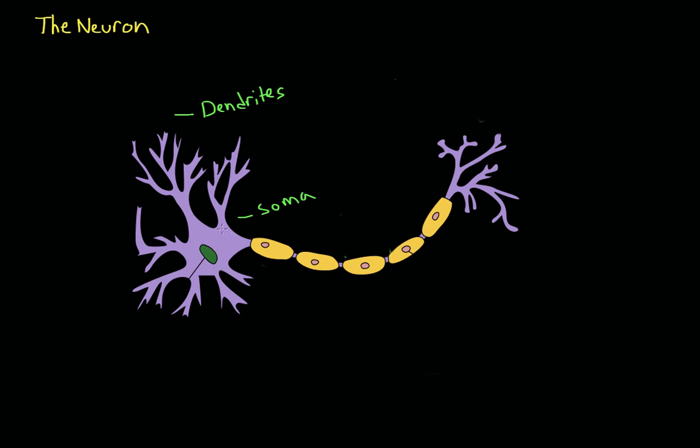But its other job is to sum the information that it has gained from all of the different dendrites. And once it has done that, it sends the message down the axon, which is this long thing here. And the axon is responsible for conducting the signal or the message from the front of the cell to the end of the cell.